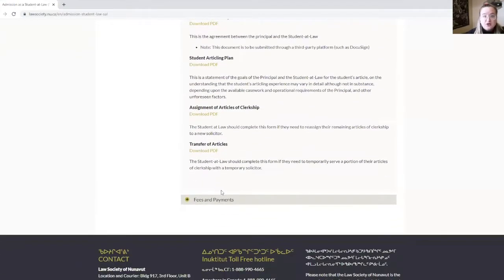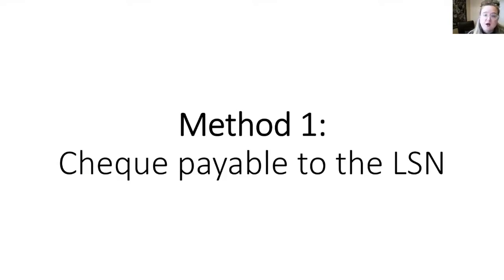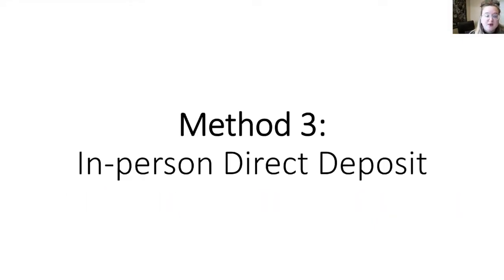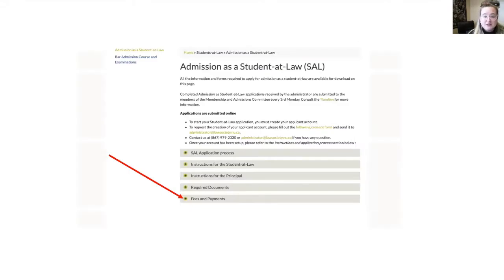You will also need to inform the Law Society of your preferred method of payment for the application and admission fees. You have four methods of payment to choose from: pay by cheque payable to the Law Society of Nunavut (please note you will have to provide the cheque number in your online application); pay by electronic money transfer to the LSN administrator; pay by in-person direct deposit; or provide the name of your employer if your employer will pay the fees. Please make sure you have the correct amount — you will find all the information under the tab Fees and Payments in the menu Admission as a Student at Law.